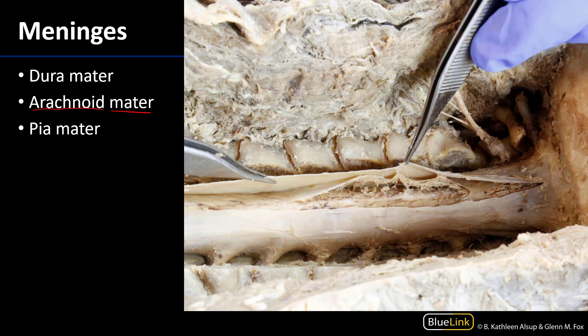Directly upon the central nervous system, to the extent that one cannot peel it away, is the pia mater. Pia means soft or delicate, so this is the soft mother, in contrast with the hard mother. The pia mater covers everything that we would identify as the central nervous system, so all throughout, all of this is pia mater.